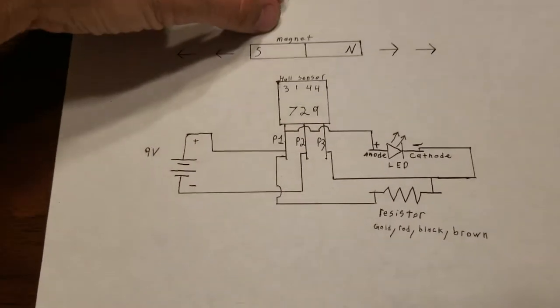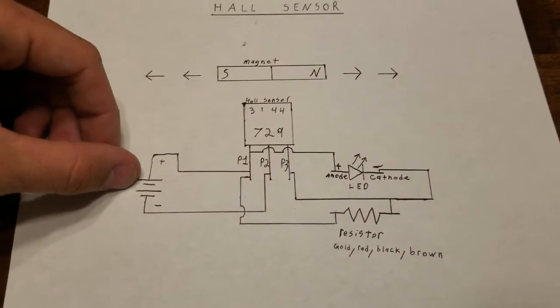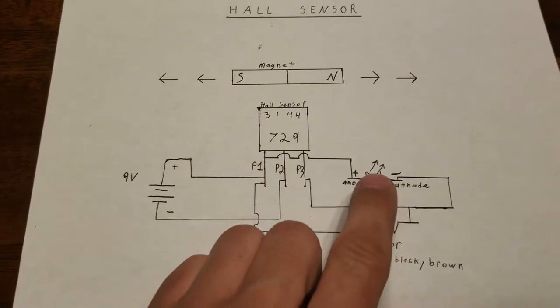What I have here is a magnet, a Hall sensor, a battery, a resistor, and a diode.